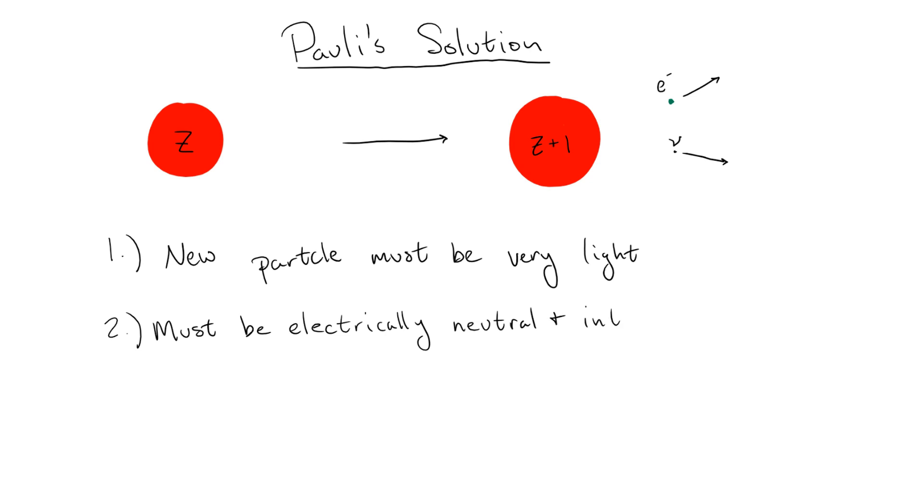Second, this new particle must not carry electromagnetic charge, otherwise the detectors searching for charge decay products like electrons would have seen them. This doesn't necessarily mean that it cannot interact with matter, after all photons carry no electric charge and they can easily interact with electrons. However, the fact that it had not been detected suggested that, on top of being electrically neutral, this particle interacts incredibly weakly with matter. In fact, it must interact so weakly that Pauli himself feared that it could not be detected. Finally, it must be a spin 1/2 fermion in order to conserve angular momentum in the decay.